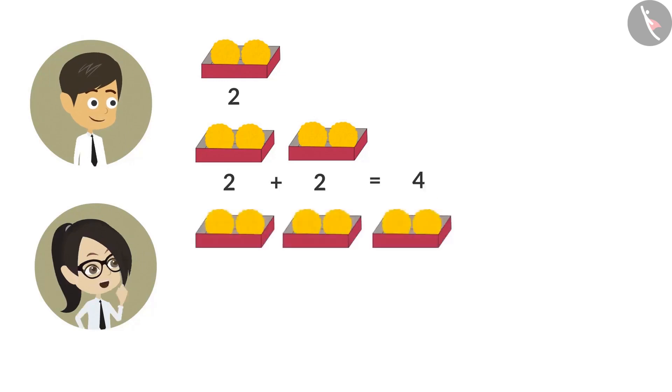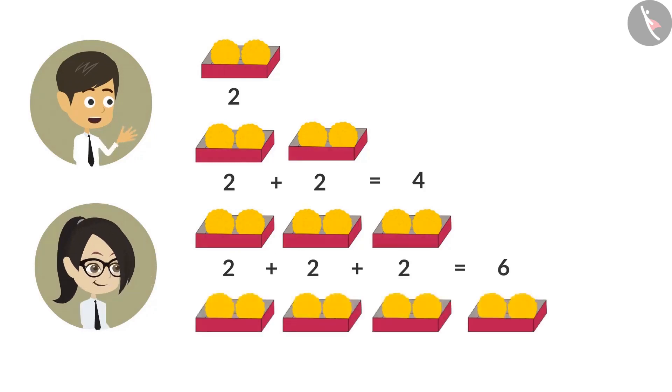To know how many ladoos are there in 3 boxes, we have to add 2, 3 times. After adding 2, 3 times, the answer we get is 6. To know the number of ladoos in 4 boxes, we have to add 2, 4 times. After adding 2, 4 times, the answer is 8.